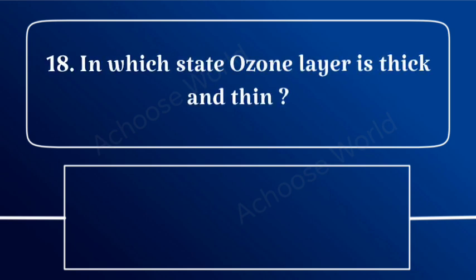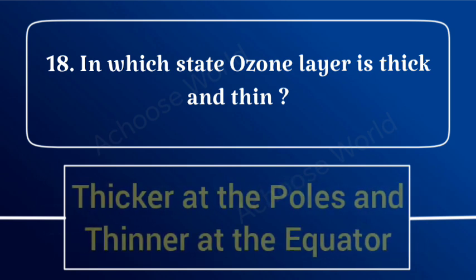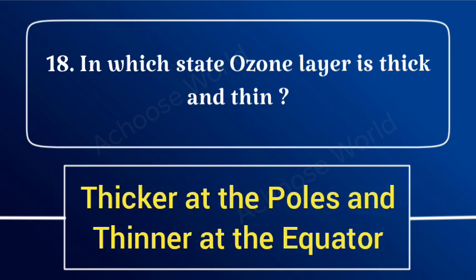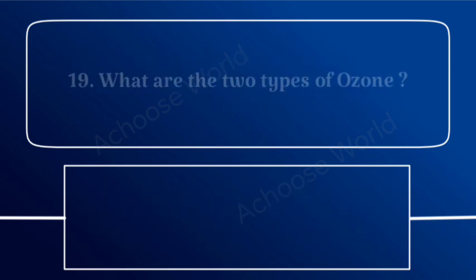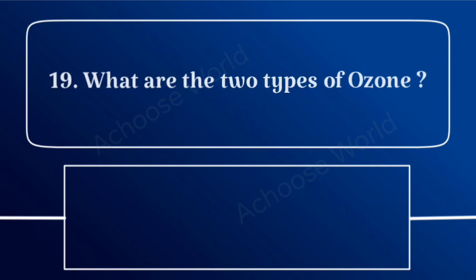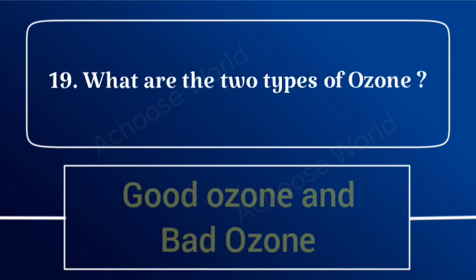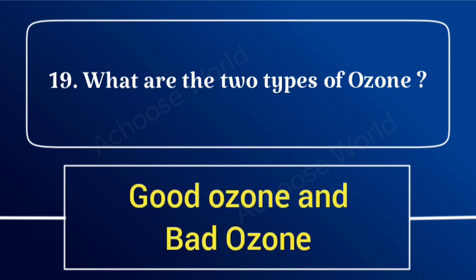In which stage is the ozone layer thick and thin? Thicker at the poles and thinner at the equator. What are the two types of ozone? Good ozone and bad ozone.